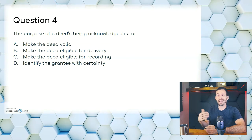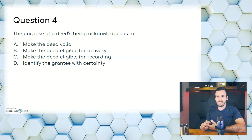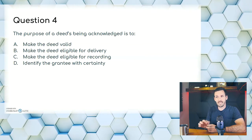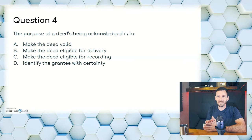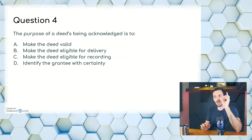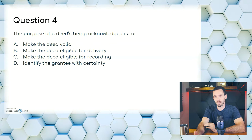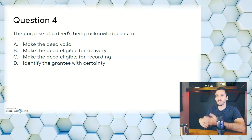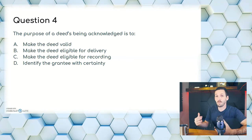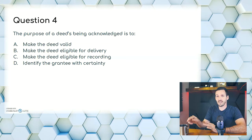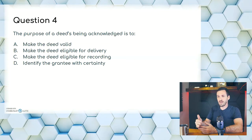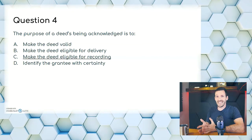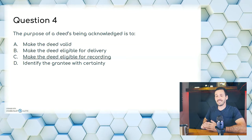Question four: the purpose of a deed being acknowledged is to — A, make the deed valid; B, make the deed eligible for delivery; C, make the deed eligible for recording; or D, identify the grantee with certainty. A deed should be acknowledged — as noted in the previous question, that makes it eligible for recording. So the answer is C. This is exactly why this test is tricky: the last question says the deed doesn't need to be acknowledged, but here we're saying why it should be. It doesn't need to be, but it should be — to make the deed eligible for recording.